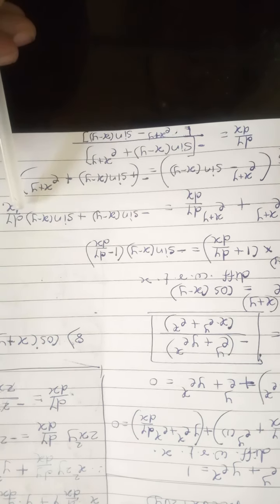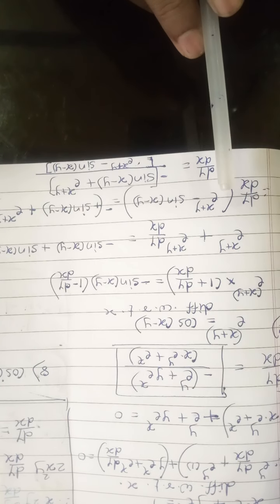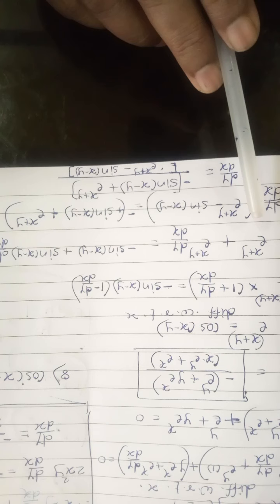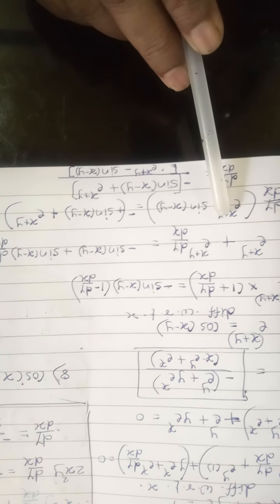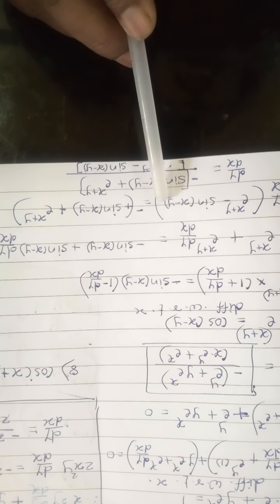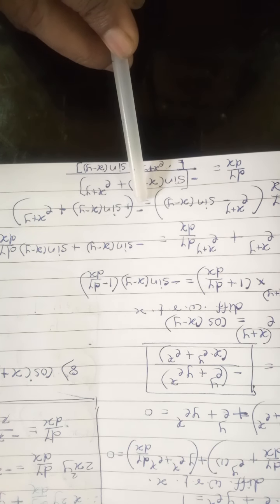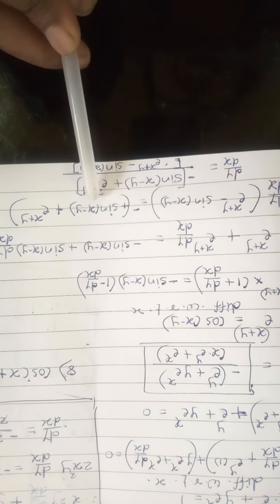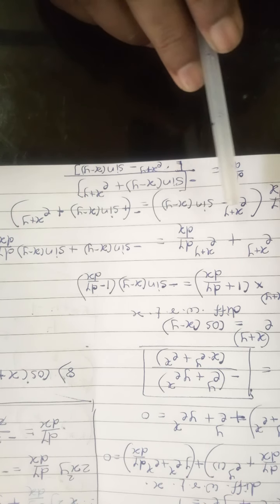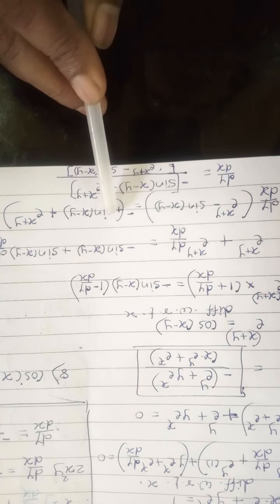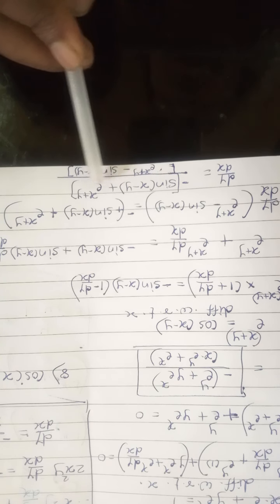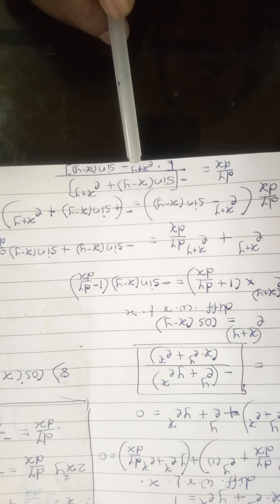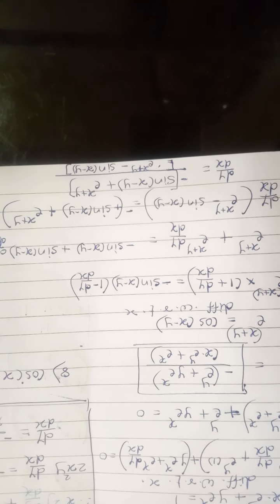Collecting dy/dx terms on the left: dy/dx·(e^(x+y) − sin(x−y)) = −sin(x−y) − e^(x+y). Factoring out −1: dy/dx·(e^(x+y) − sin(x−y)) = −(sin(x−y) + e^(x+y)). Therefore dy/dx = −(sin(x−y) + e^(x+y)) / (e^(x+y) − sin(x−y)). This is the answer to example 7.